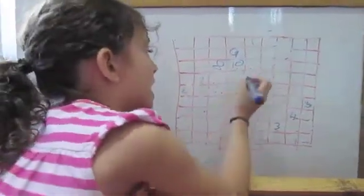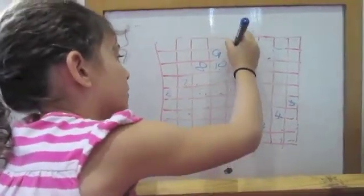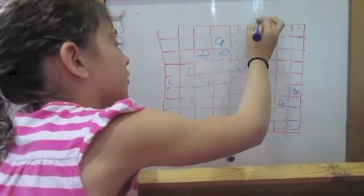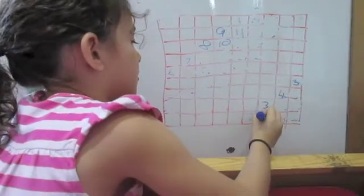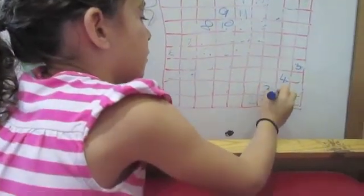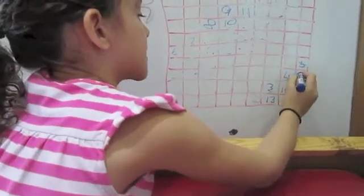And so, ten, eleven can go here. Twelve can go here. And thirteen can go here. Fourteen can go here. Fifteen can go here.